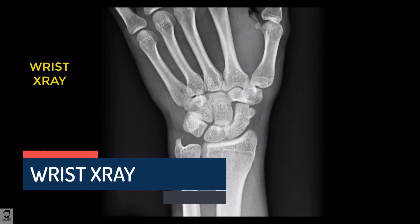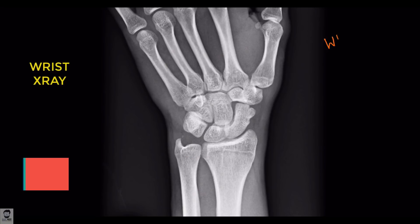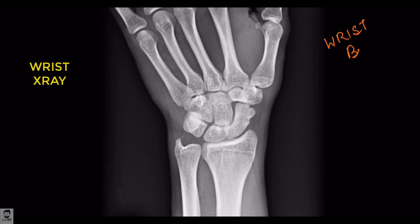Welcome to another lecture. We'll be talking about wrist x-rays, which are pretty easy to understand. We're mainly going to be talking about wrist bones and how they are organized in the wrist. They are basically two rows of carpal bones — one is a proximal row and one is a distal row.